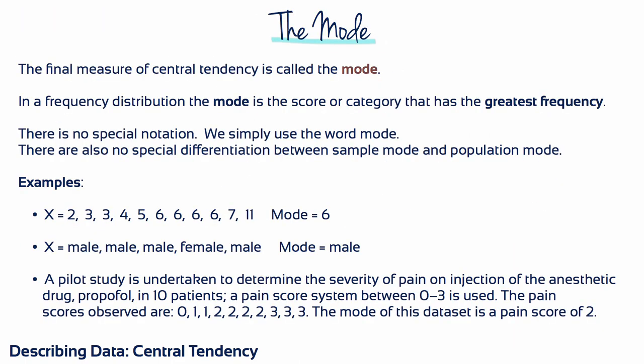The mode is perhaps the easiest of the 3 measures of central tendency to calculate. The mode is the most common score of all the scores in a sample. It's easy to spot on a frequency distribution table, histogram or frequency polygon. In these examples, 6 is the most frequent score and therefore the value of the mode.